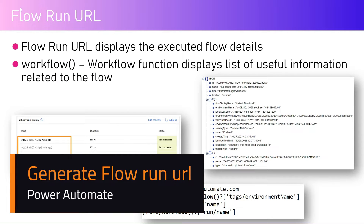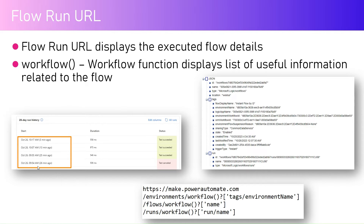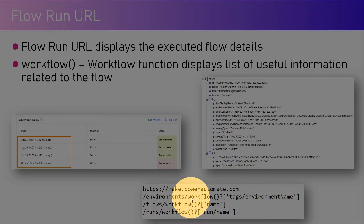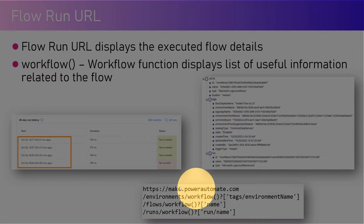In this video I'm going to talk about Flow Run URL. A Flow Run URL is basically a URL which displays the executed flow details. If you go into the backend of make.powerautomate.com you can see the flow run history. The URL is structured as: https://make.powerautomate.com/environments/{environment-name}/flows/{workflow-name}/runs/{workflow-run-id}.